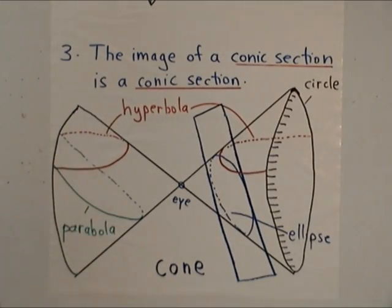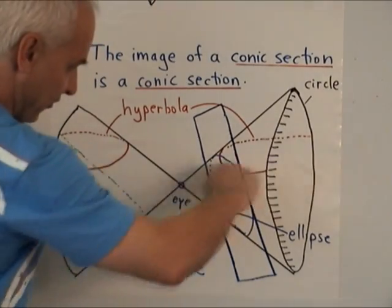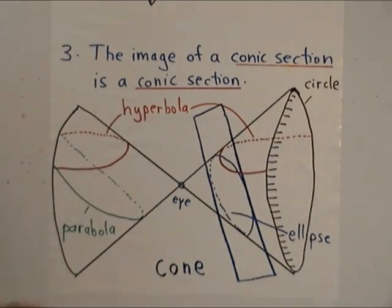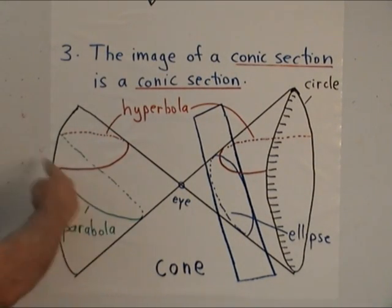that's by definition a conic section. So that plane there intersects it in the ellipse. A plane like this intersects it in a hyperbola. And if we take a plane that's parallel to one of the sides of the cone, we get a parabola.